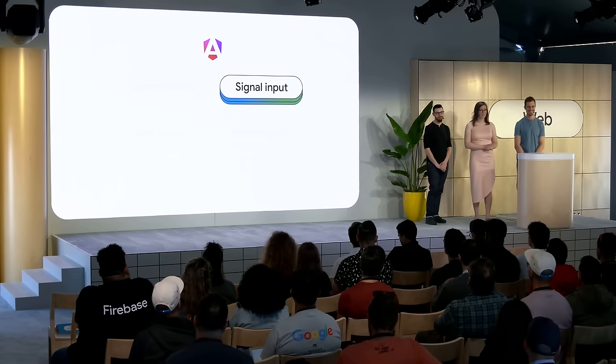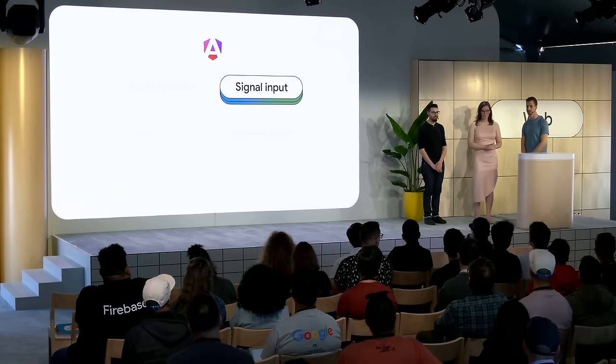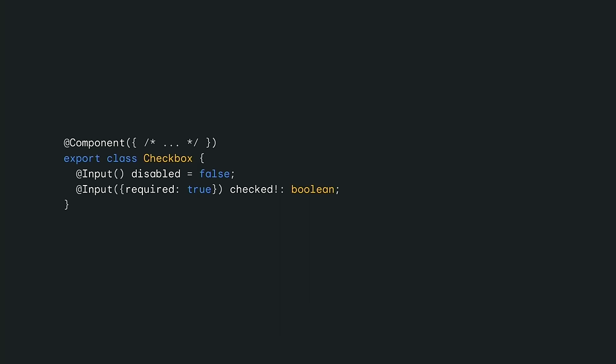Now for the big one that everyone has been waiting for — signal inputs. We've been having a very popular issue about reactive inputs. If you've built anything with Angular before, you're familiar with input properties. Inputs are optional by default but can also be marked as required. Here's the same with signal-based inputs. Just like queries, you can use the values of these inputs in computed expressions and effects, which dramatically simplifies patterns where you're inspecting values for changes in ngOnChanges. Input signals are read-only, so it always remains clear where a particular piece of state is coming from.